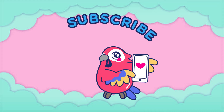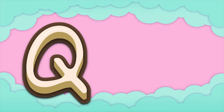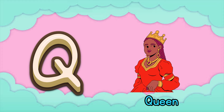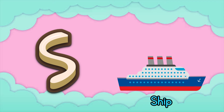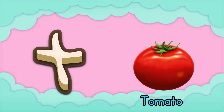Dum-dee-da-dum-dum-dum. Q is for queen, quick-quick queen. R is for rabbit, ra-ra-rabbit. S is for ship, sh-sh-ship. T is for tomato, t-t-t-tomato.